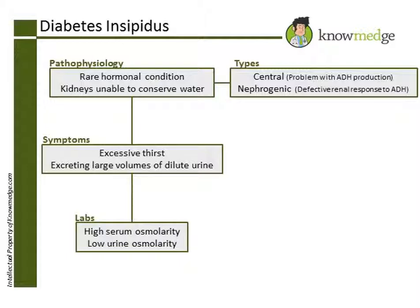Choice B, urine osmolarity, is also incorrect because in both conditions the urine would be very dilute and the urine osmolarity would therefore be low.